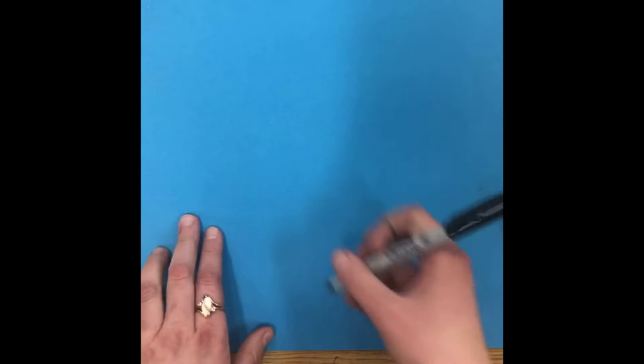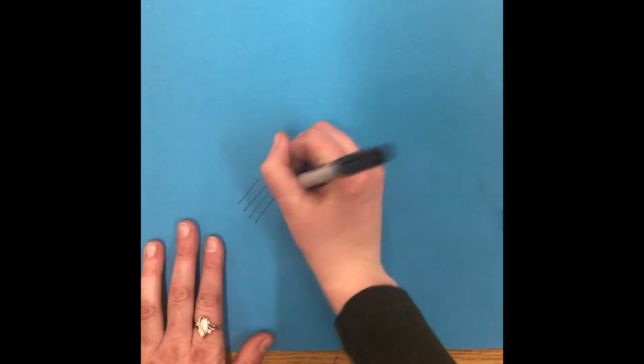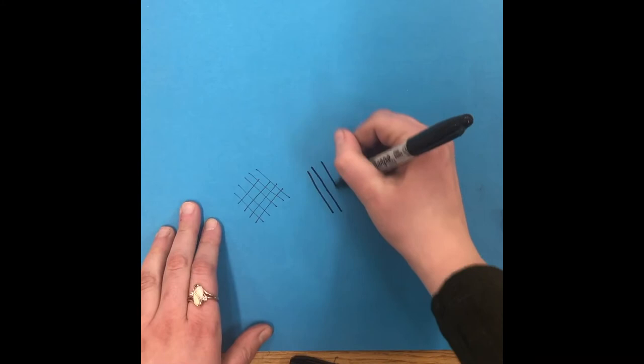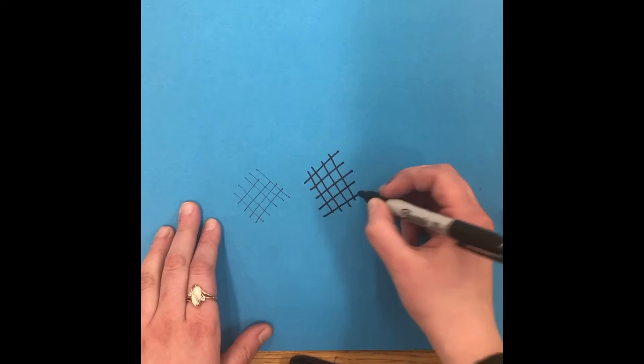I'm going to make some diagonal lines and when I have those diagonal lines cross each other it is called cross hatching. I can do that with this one as well. There is quite a bit of difference in terms of tone.